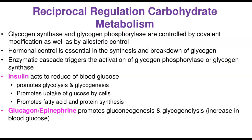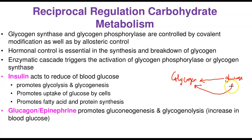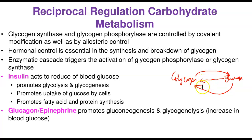The regulation of carbohydrate metabolism is reciprocal, in the sense that some enzymes will catalyze the synthesis of glycogen while another series of enzymes will also catalyze the breakdown of glycogen to glucose. These enzymes act in opposing directions.